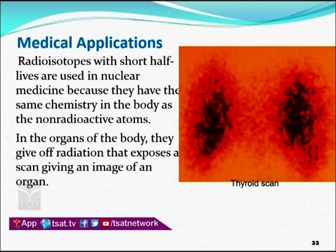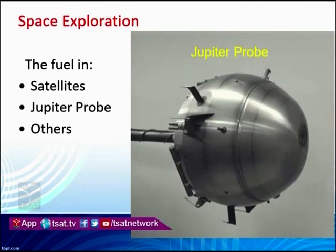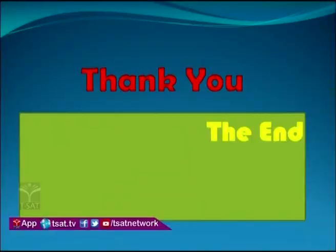The medical applications of radioactivity include the use of radioactive isotopes with short half-lives in nuclear medicine, because they have the same chemistry in the body as non-radioactive atoms. In the organs of the body, they emit radiation that exposes a scan, giving an image of an organ. In space applications, the radioisotope thermoelectric generator (RTG) uses radioactivity — where two dissimilar metals at different temperatures generate electric current — and is used as fuel in satellites like Jupiter probes. Radioactivity is also used in diagnostic nuclear medicine.